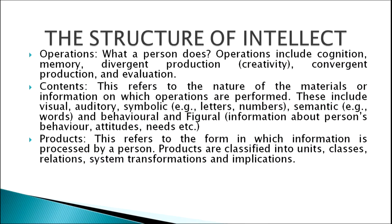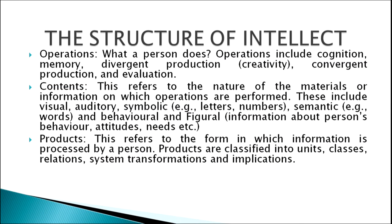Then come the contents, which refer to the nature of material or information on which operations are performed. These include visual, auditory, symbolic (such as letters and numbers), semantic (words), and behavioral information about a person's behavior, attitude, and needs. Then come the products, which refer to the form in which information is processed. Products are classified into units, classes, relations, systems, transformations, and implications.